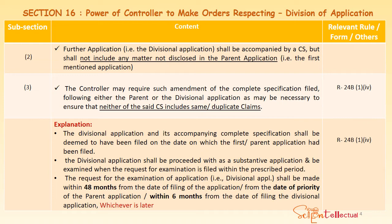Subsection 3: The controller may require such amendment of the complete specification filed — either the parent or the divisional — as may be necessary to ensure that neither of them includes the same or duplicate claims. The parent application and the divisional application will share the same subject matter, but claims will be different for them. The relevant rule is Rule 24B(1)(4). The divisional application and its accompanying complete specification shall be deemed to have been filed on the date on which the first or parent application was filed.